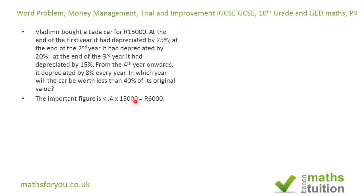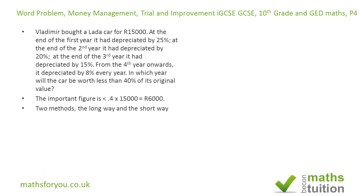The key number here is 40% of 15,000 rubles, which gives us 6,000 rubles. I'm going to use two methods — what I call the long method and the short method.